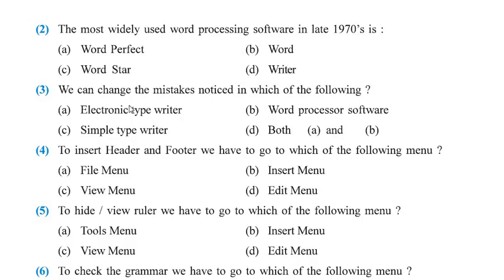We can change the mistakes noticed in which of the following? We can change mistakes in an electronic typewriter and word processor software — both. So the answer is option D, both A and B.